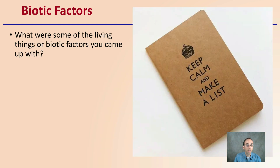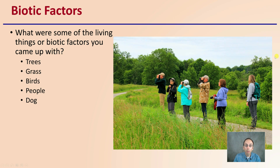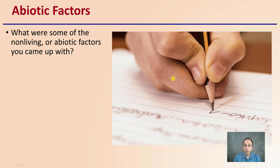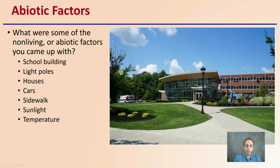Hopefully you did that. For biotic factors — living things — your list might include trees, grass, birds, people, or someone walking their dog. For your abiotic list, that could include the school building, light poles, houses, cars, and sidewalks, but don't forget about sunlight, temperature, and wind as well.